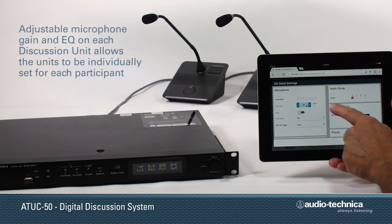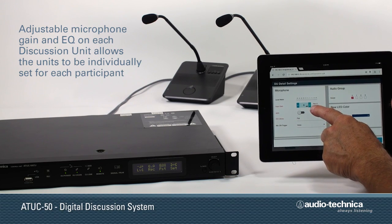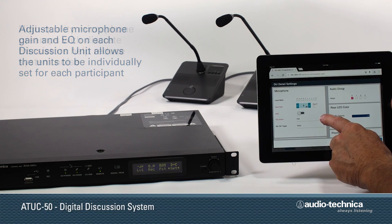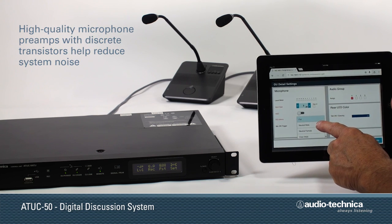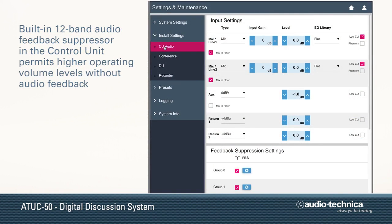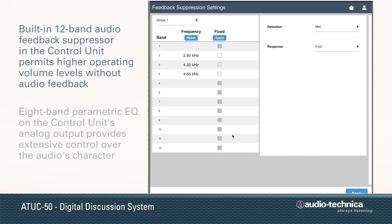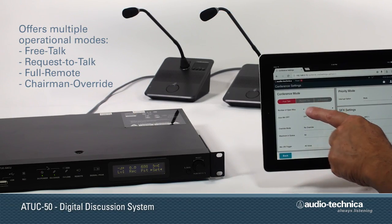Adjustable microphone gain and EQ on each discussion unit allows the units to be independently set to serve the voice of each participant, whereas high-quality microphone preamps with discrete transistors help reduce system noise. A 12-band audio feedback suppressor built into the ATUC50CU control unit permits higher operating volume levels without feedback, while an 8-band parametric EQ on the control unit's analog output provides extensive control over the audio's character.